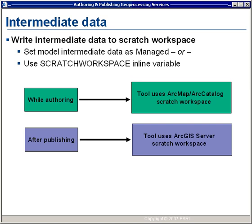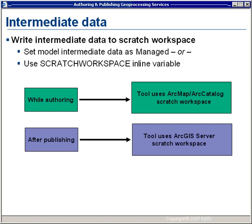The third item we need to examine when authoring our geoprocessing service is intermediate data — data generated as output of one processing step, used as input to another processing step, and temporary. You want to make sure you write intermediate data to a scratch workspace. This can be done in one of two ways: we can set intermediate data as managed by right-clicking and choosing managed, which writes it to the scratch workspace. Or we can use the scratch workspace inline variable to designate that data be written to the scratch workspace. When publishing the model, the tool will use the scratch workspace that ArcGIS Server has created.